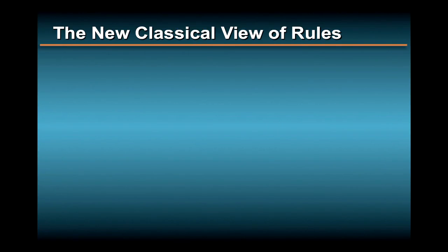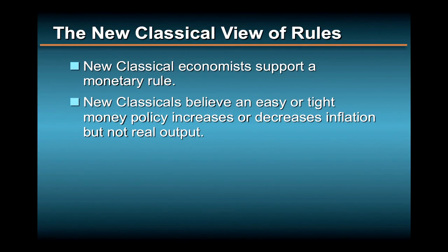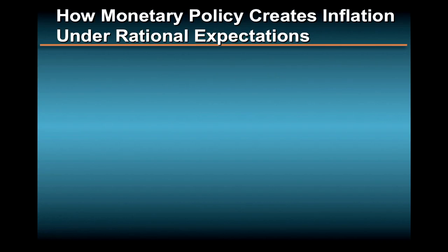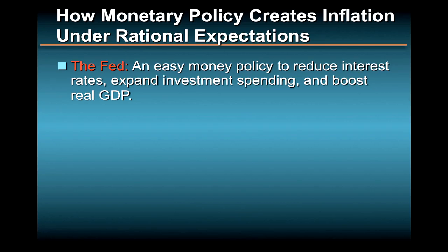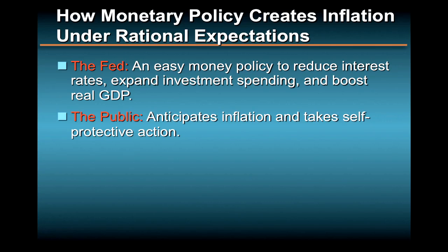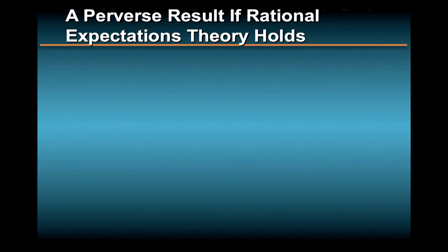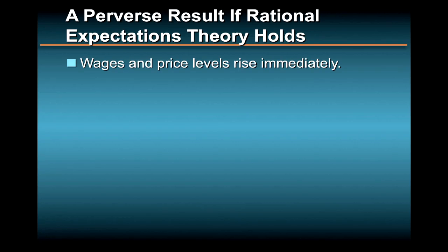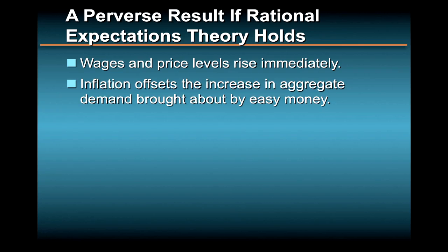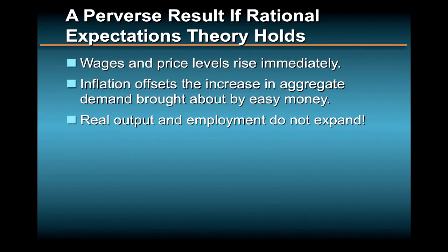Generally, new classical rational expectations economists also support a monetary rule. They conclude that an easy or tight money policy will alter the rate of inflation but not real output. For example, suppose the Federal Reserve implements an easy money policy to reduce interest rates, expand investment spending, and boost real GDP. On the basis of past experience and economic knowledge, the public will anticipate that this policy is inflationary and take self-protective action. Workers will press for higher wages, firms will increase product prices, and lenders will raise their nominal interest rates. While these responses are designed to prevent inflation from having adverse effects on real incomes of workers, businesses, and lenders, the collective impact is to immediately raise wage and price levels. This offsets the increase in aggregate demand brought about by easy money, so real output and employment do not expand — but wages and prices do.